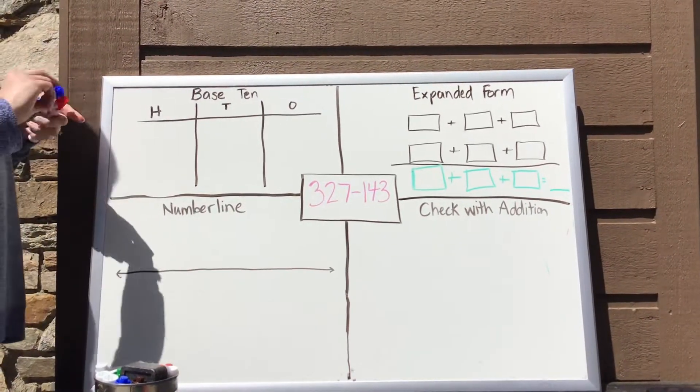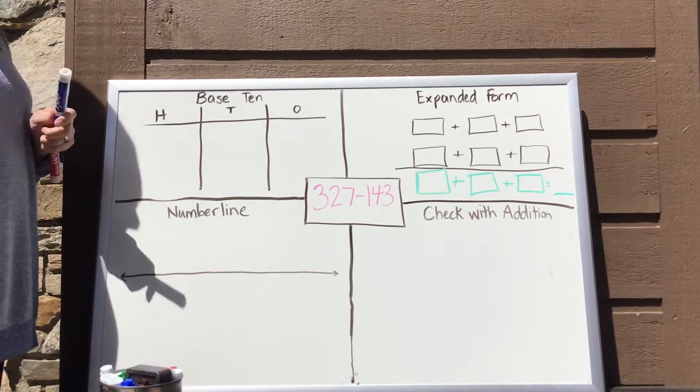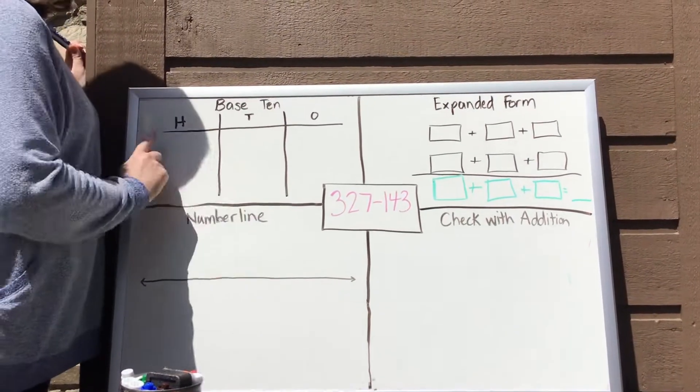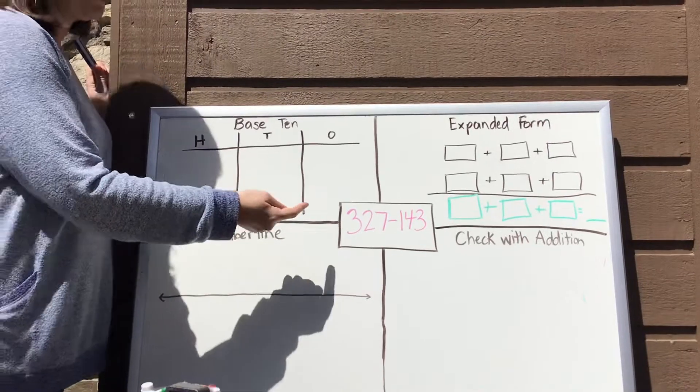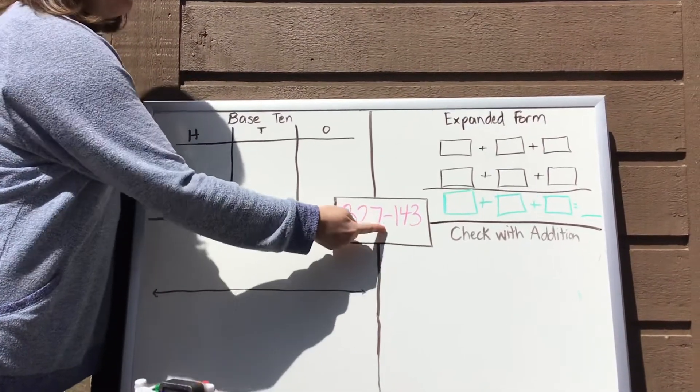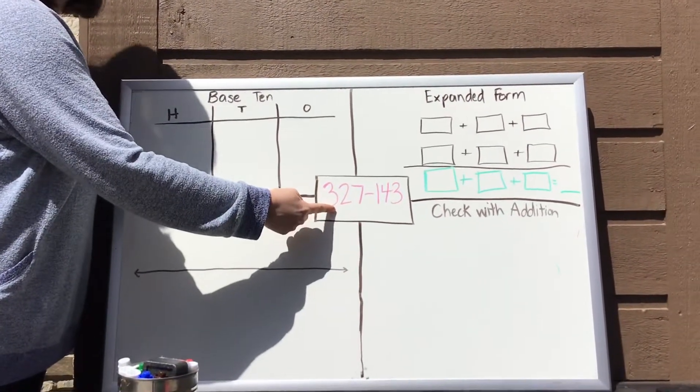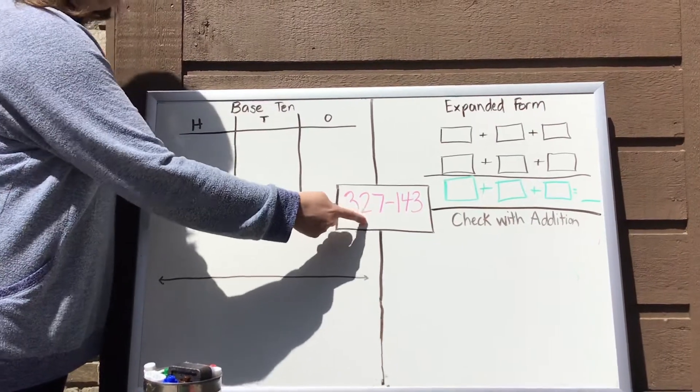And we're going to start with base 10 blocks. And remember from Mr. Williams' video earlier this week that when you're using base 10 blocks for subtraction, you're only going to draw in the blocks for your whole number, which is the first number in your problem. So 327.